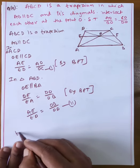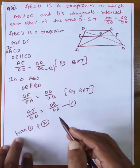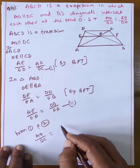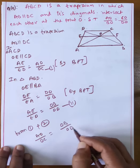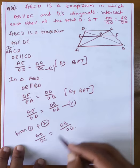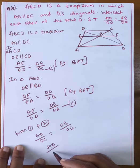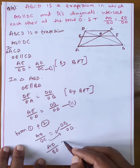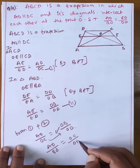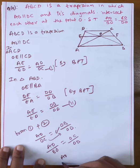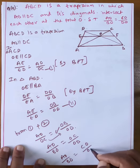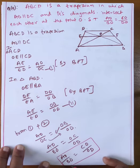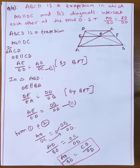From equations one and two, AO by OC equals OB by OD. Therefore AO by OB equals OC by OD. Hence proved.